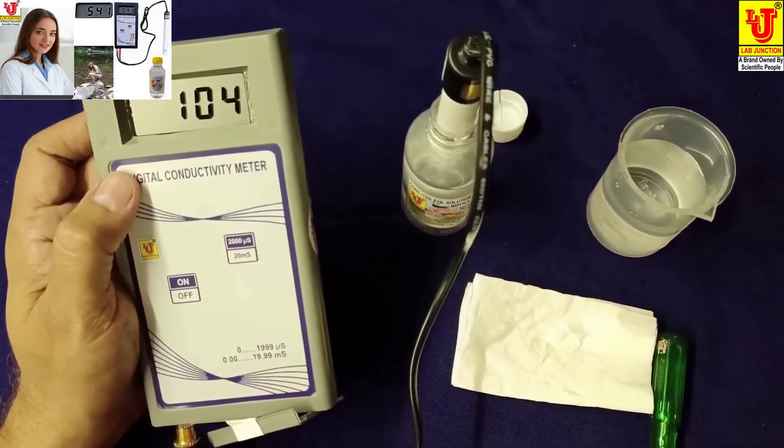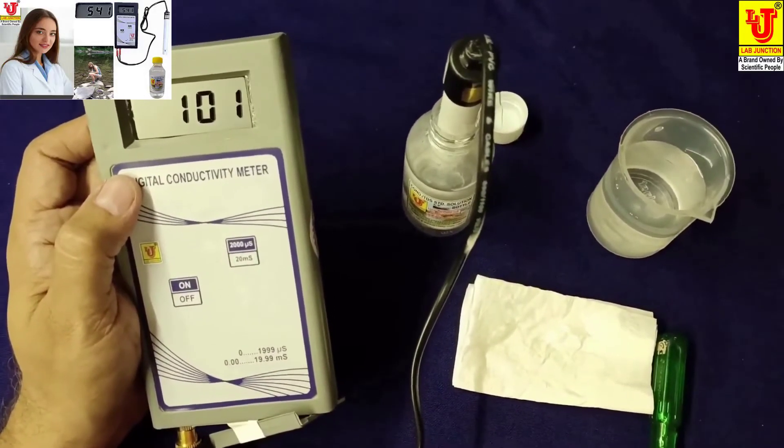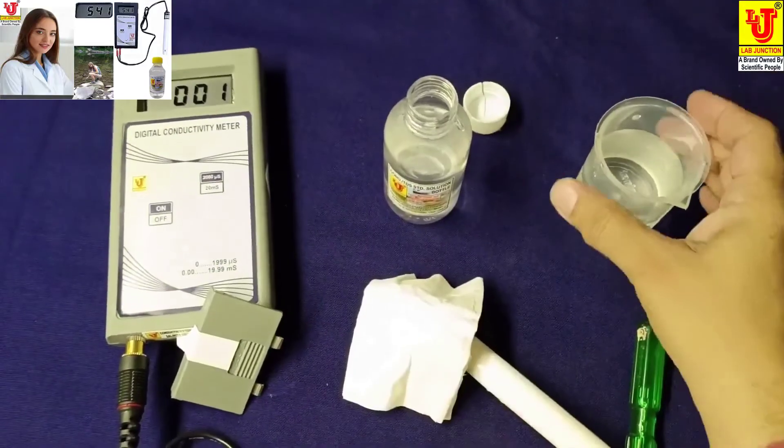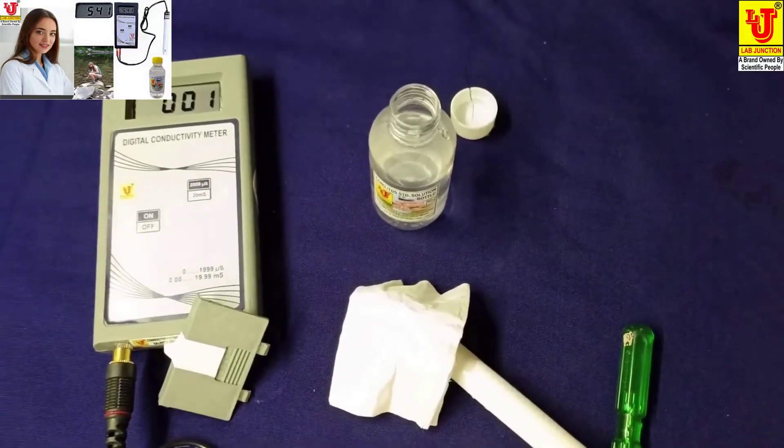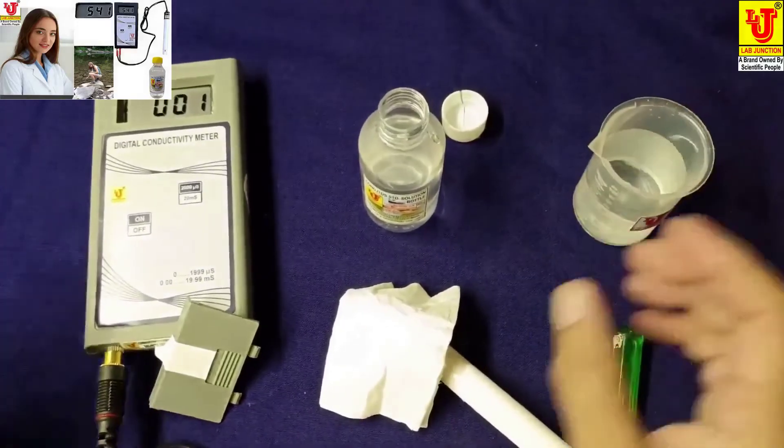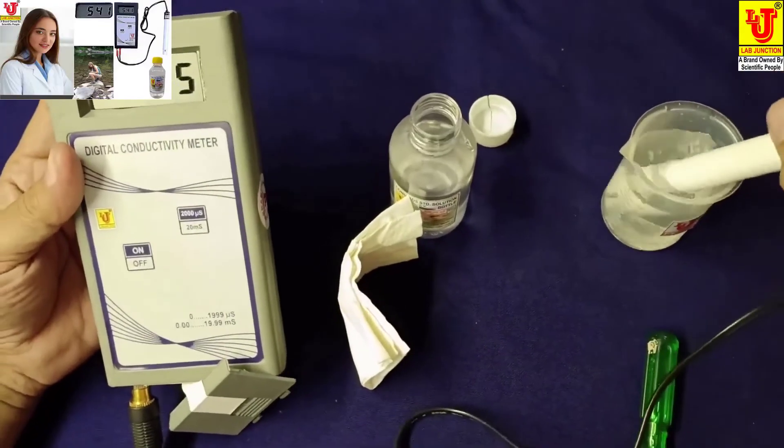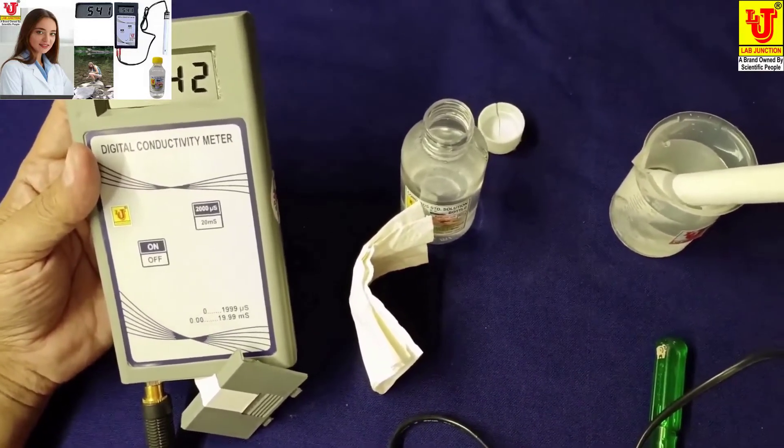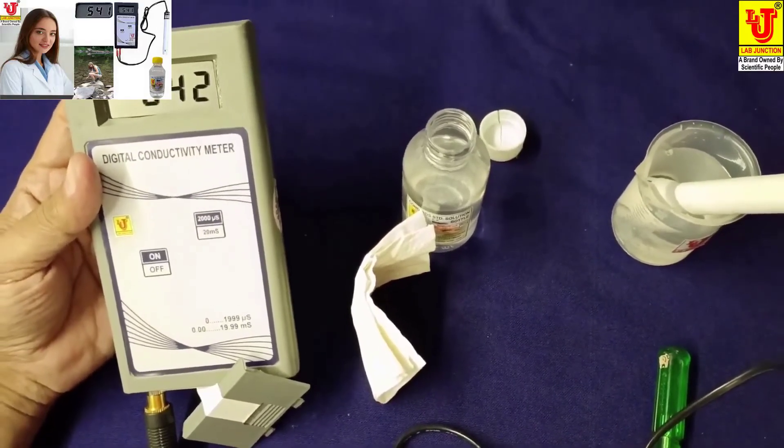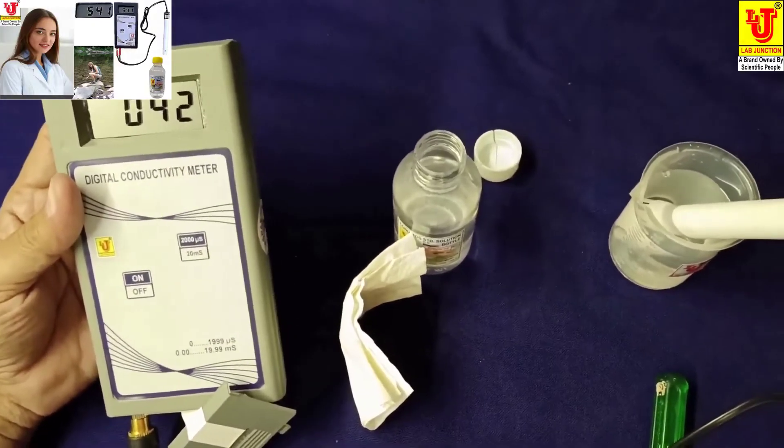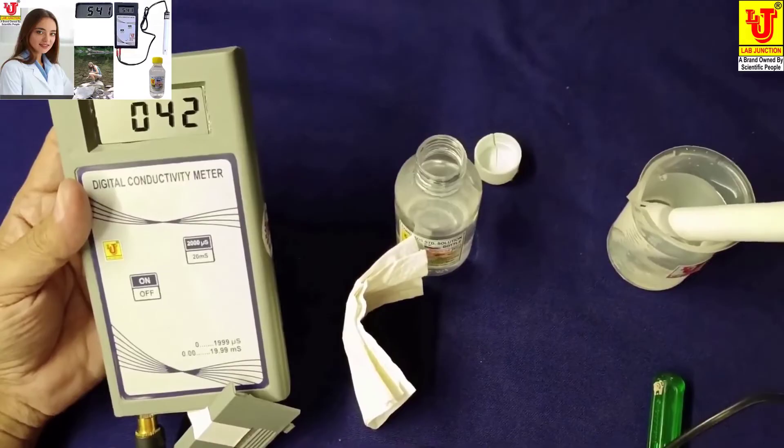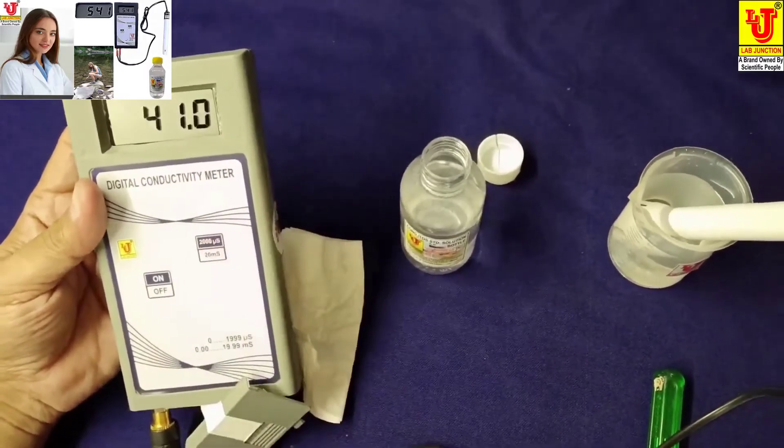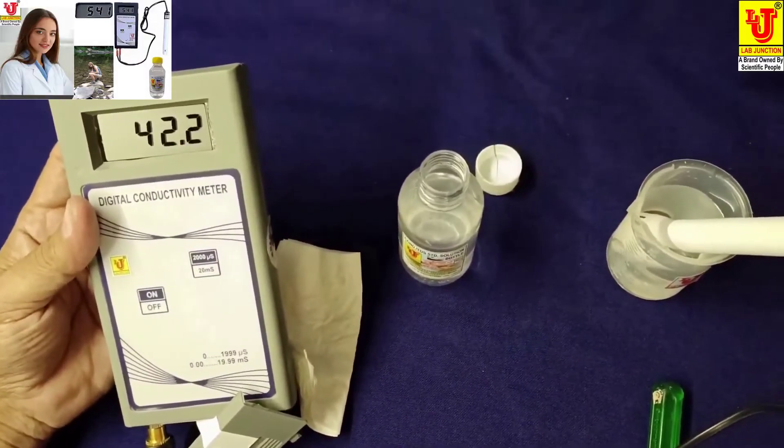Now I am changing another sample. This is another sample and dip your conductivity cell in this sample. This is the value of drinking water. It means 42 microsiemens. And this is, suppose I am changing range, 0.042 millisiemens.